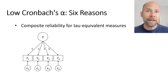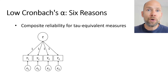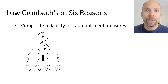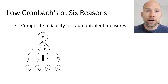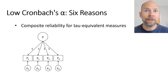Tau equivalence means the components measure a single factor with equal loadings, and there are no correlations between error terms in this factor model — the epsilon measurement error variables are not allowed to correlate. So the tau equivalence model is a special model of classical test theory with a single factor and equal loadings, and Cronbach's alpha applies to that particular measurement model.